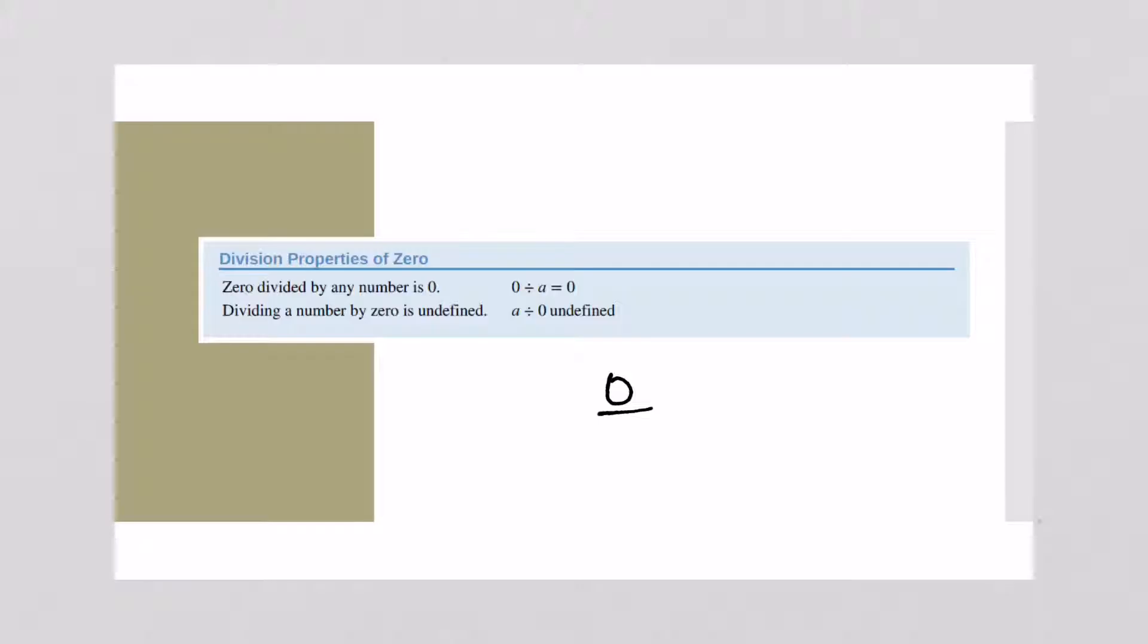0 divided by any number is 0, but if you turn that around, if you write it as 4 divided by 0, that is undefined. You are not allowed to ever divide by 0. Ever. So anytime you have 0 in the denominator, your answer should always be...